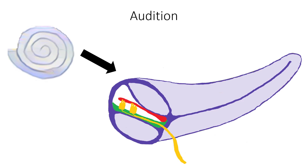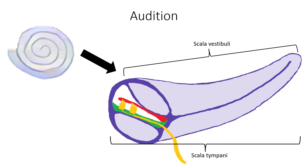Let's look into the details of how sound vibrations are converted into nerve impulses in the cochlea. When you take the cochlea and unfold it, inside you will find a fluid-filled tube called scala vestibuli, which extends from the oval window to the tip of the cochlea, where it becomes scala tympani, which extends from the tip of the cochlea to the round window.